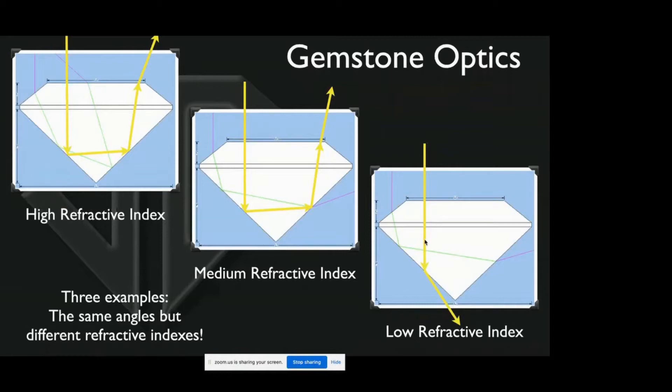And this is a low refractive index, so these are all the same angles but the low refractive index means the light is bent less. Everybody who's studied gemology has no doubt studied refractive index, and that is how much the light is bent.